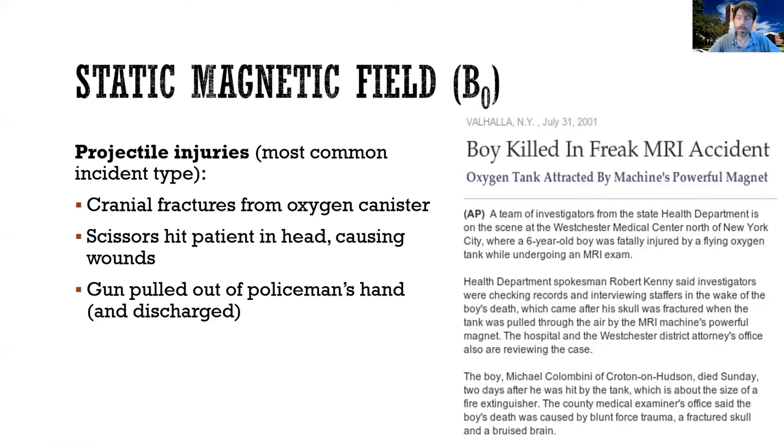There are at least two cases, if I remember correctly, of a gun being pulled out of either a holster or somebody's hand. And then, of course, the gun rushing towards the MRI machine, impacting against the wall of the MRI machine and discharging. So there are a number of accidents of this type that have occurred. So projectile injury is the most typical type of injury in MR accidents, but there are several other equally dangerous ones.